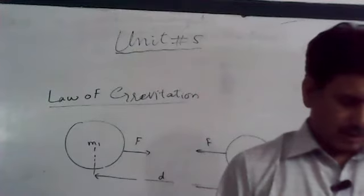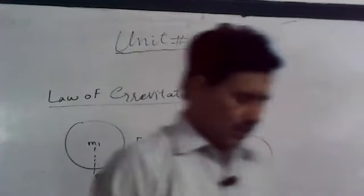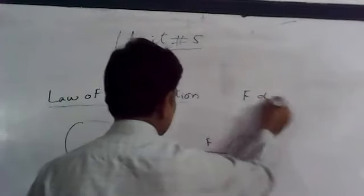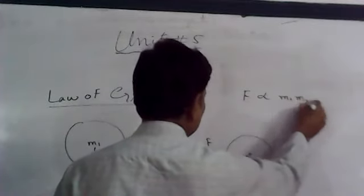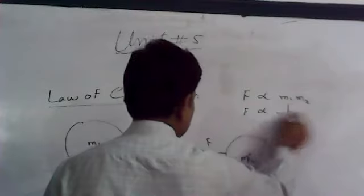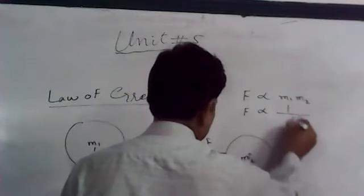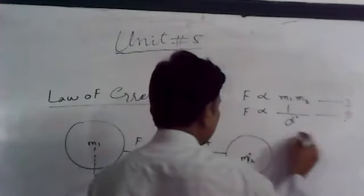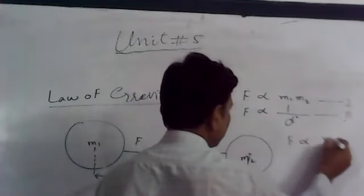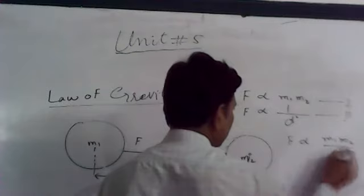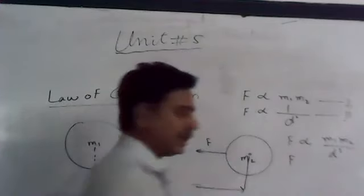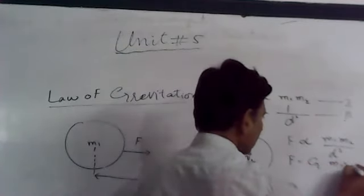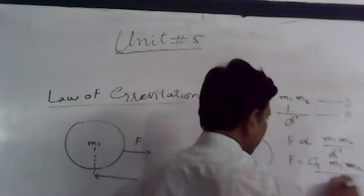Every body in the universe attracts other bodies with a force F which is directly proportional to the product of their masses M1 and M2, and inversely proportional to the square of the distance D². Combining these, F is proportional to M1 M2 over D². Introducing the gravitational constant G, we get the formula.